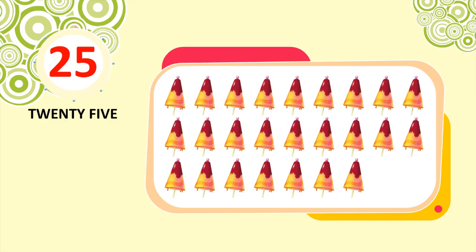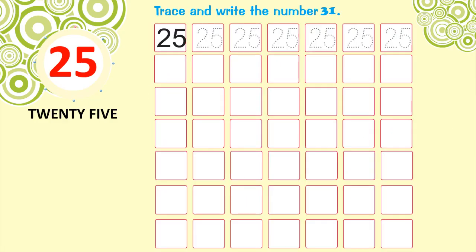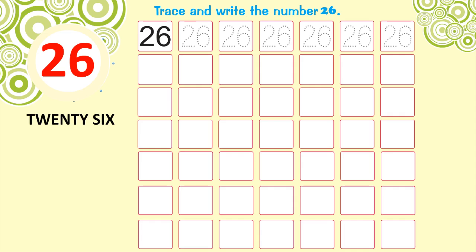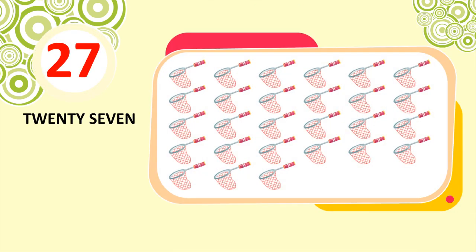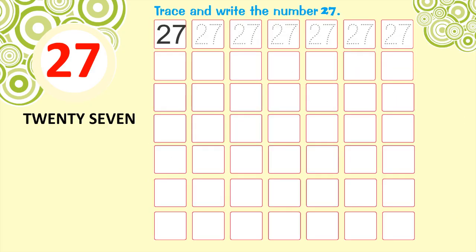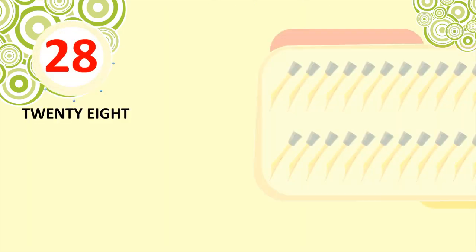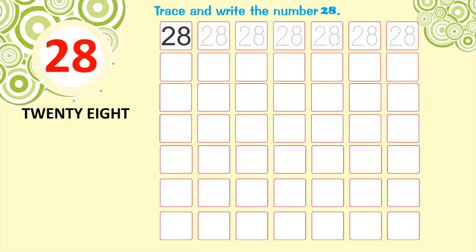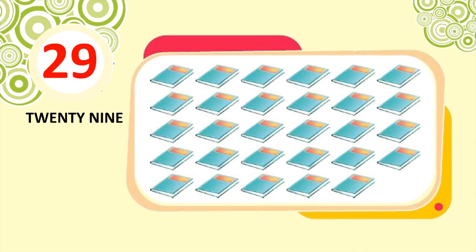25. 25 ice creams. Trace and write the number 25. 26. 26 bats. Trace and write the number 26. 27. 27 nets. Trace and write the number 27. 28. 28 nibs. Trace and write the number 28. 29. 29 books. Trace and write the number 29.